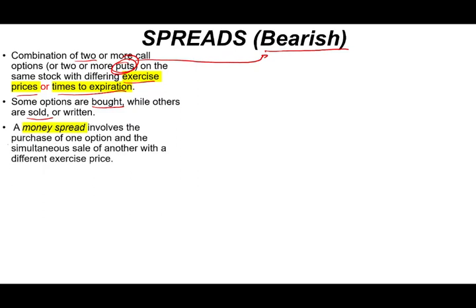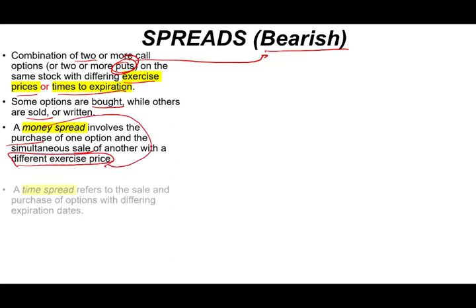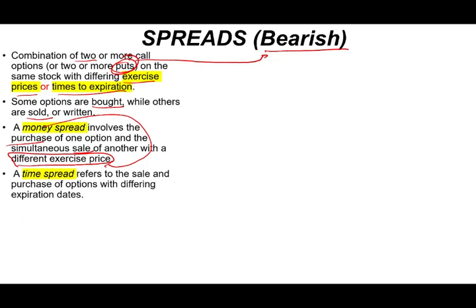So a money spread involves the purchase of one option and the sale of another option with a different exercise price. Remember money, price. A time spread refers to the sale and purchase of options with different expiration dates. Date, time. Okay so let's take a look at how we do things.